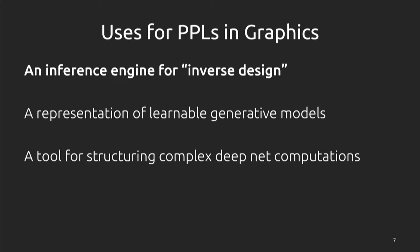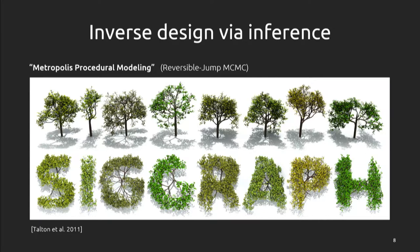On inference for inverse design, one of the first examples that impressed me is Metropolis Procedural Modeling, about seven years old now. The idea is: if we have a generative process — in this case an L-system or probabilistic grammar that generates convincing biological tree structures — what if we could place a constraint on the output and then infer the growth process that would have produced that result? Here we've got trees that look like the shape of letters when viewed from the top down, which I thought was super cool. This system was built in the typical way prior to PPLs, where the model and inference are jumbled together. If we separate the model or program from the inference engine, we can swap things in and out for more flexibility.